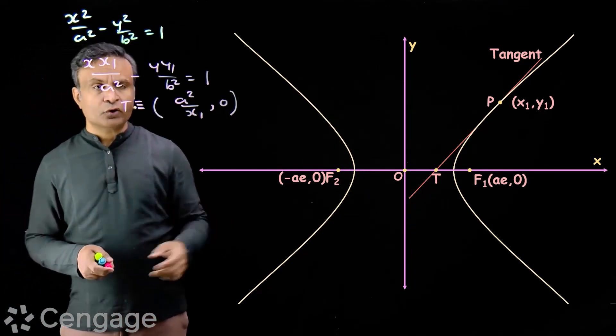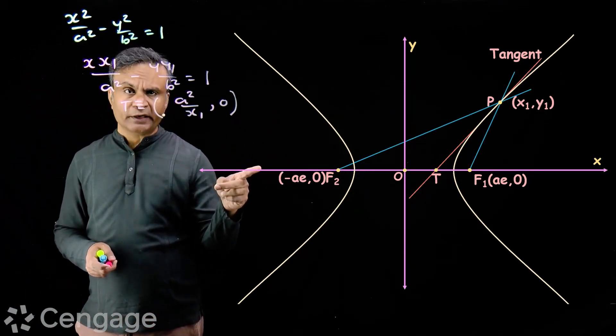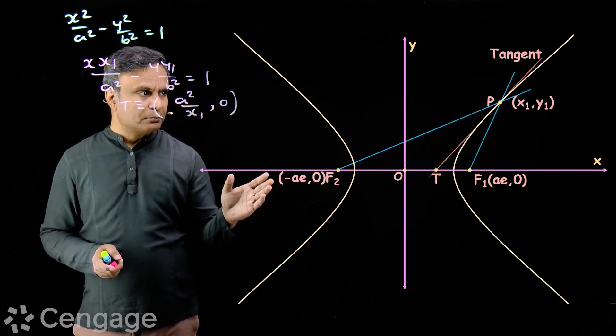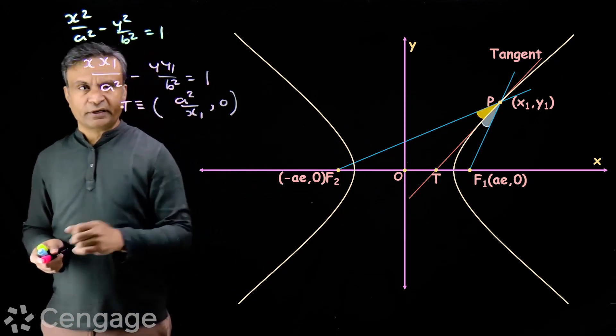Now point P has two focal lengths PF1 and PF2. Property is tangent line bisects angle F1PF2.